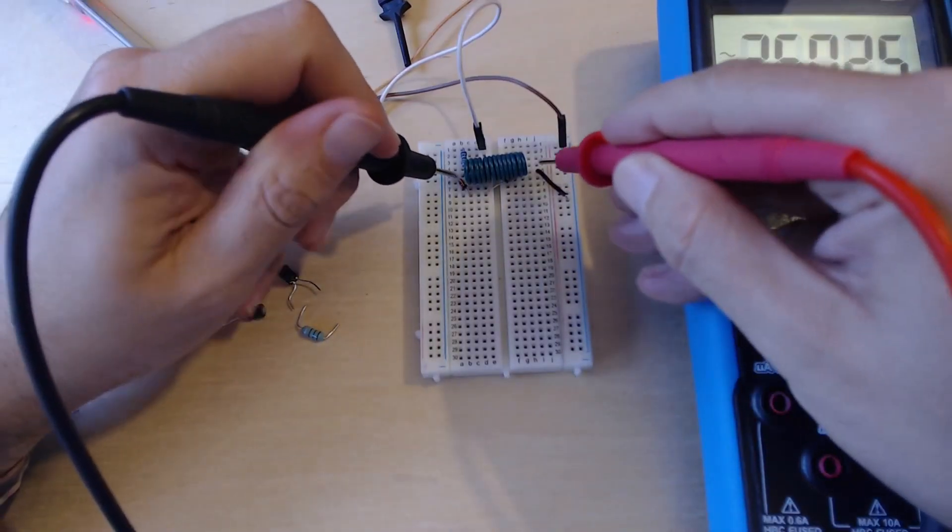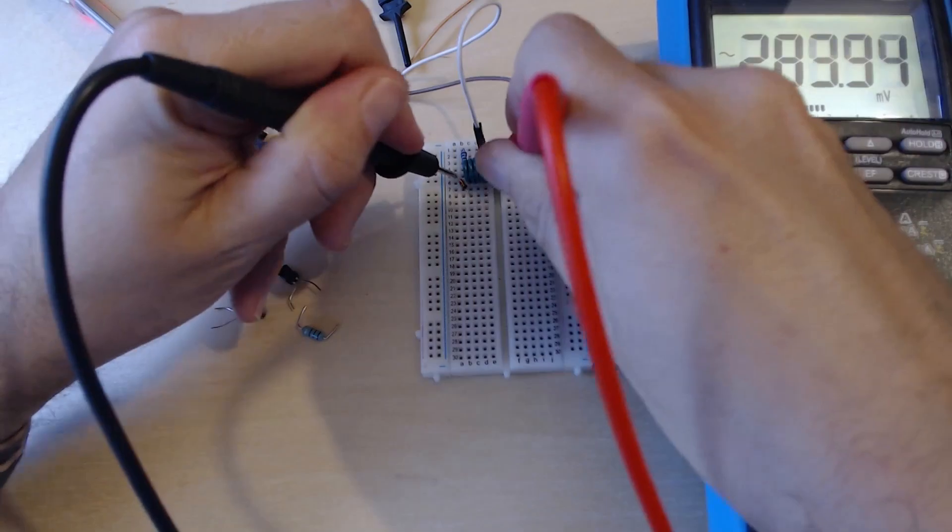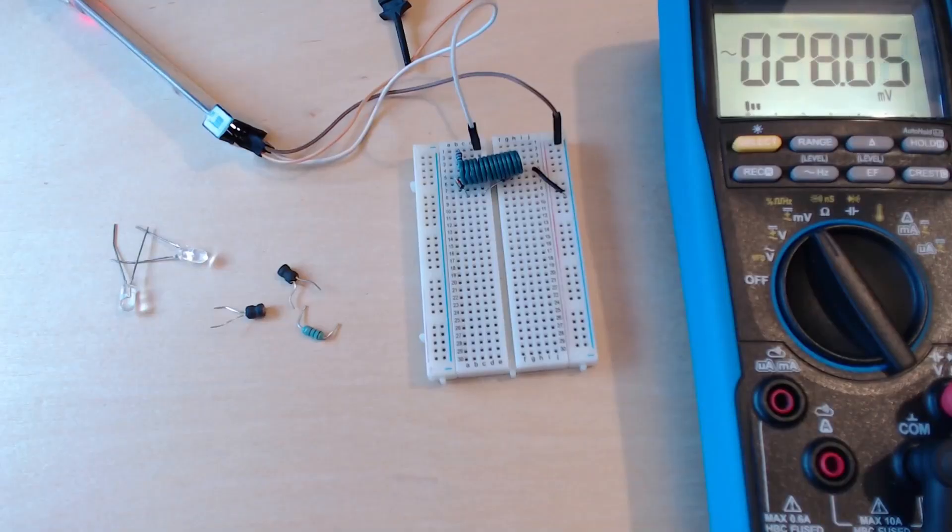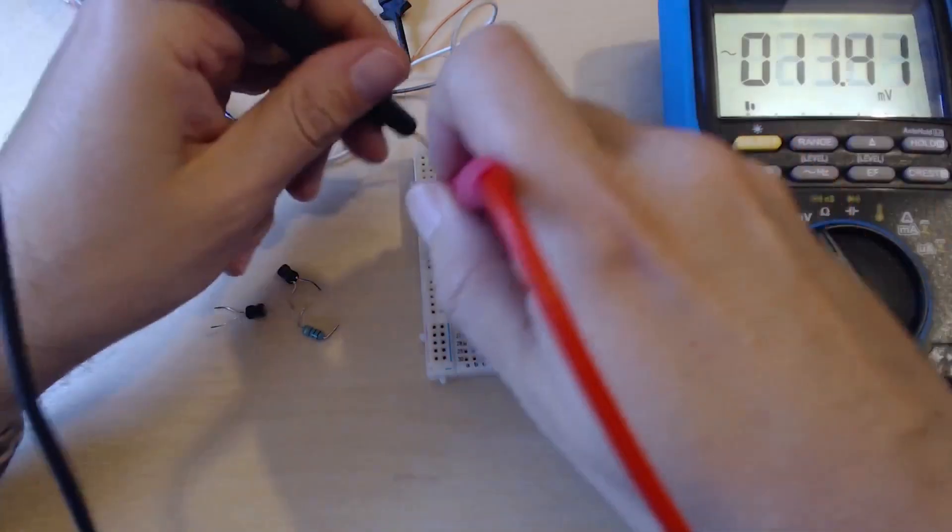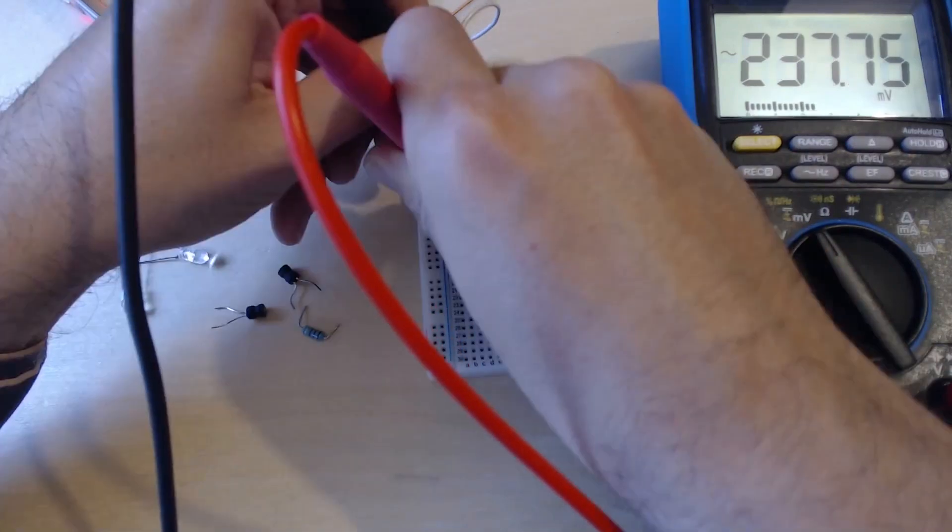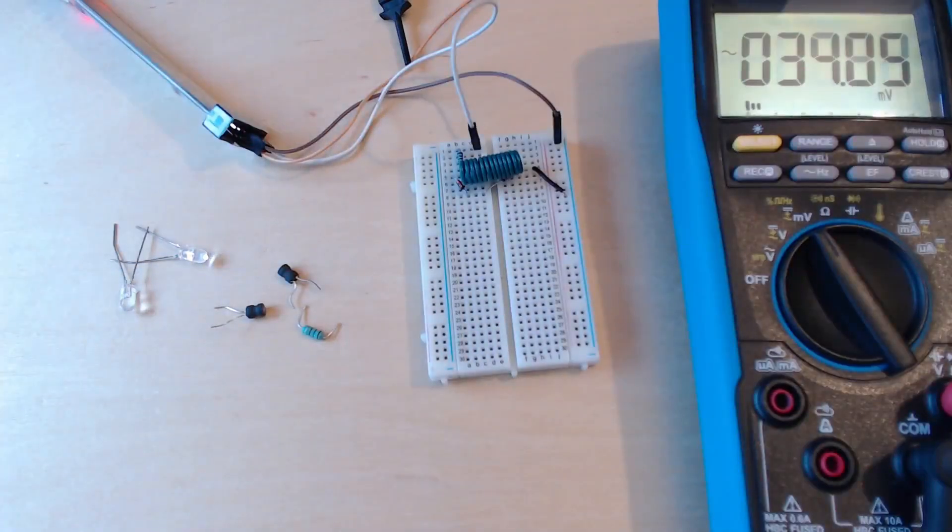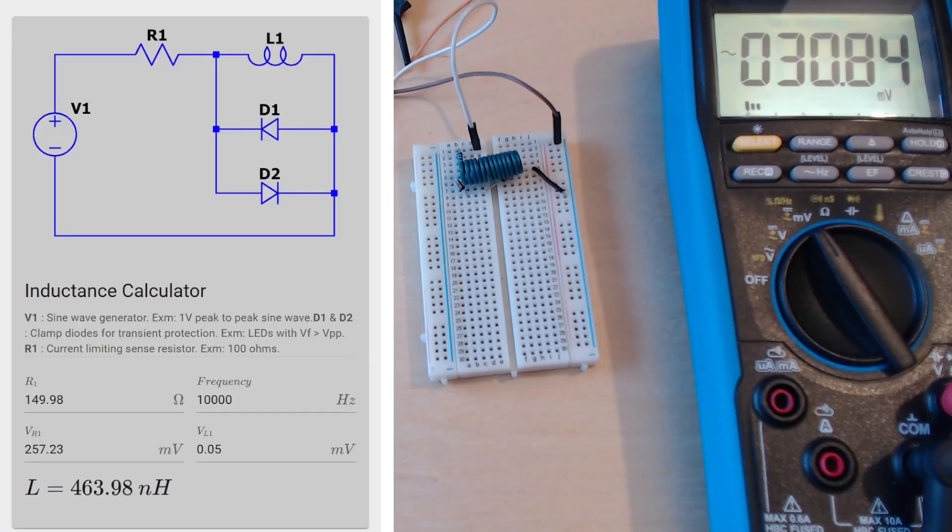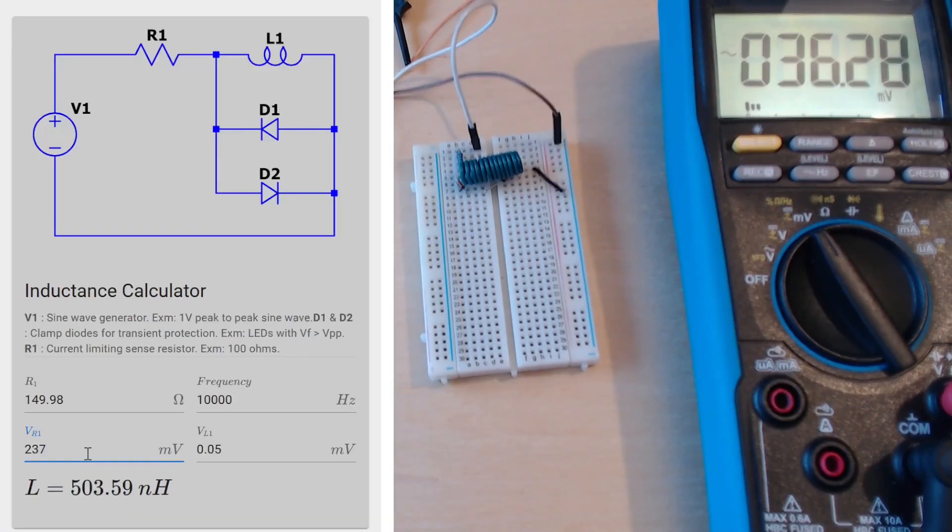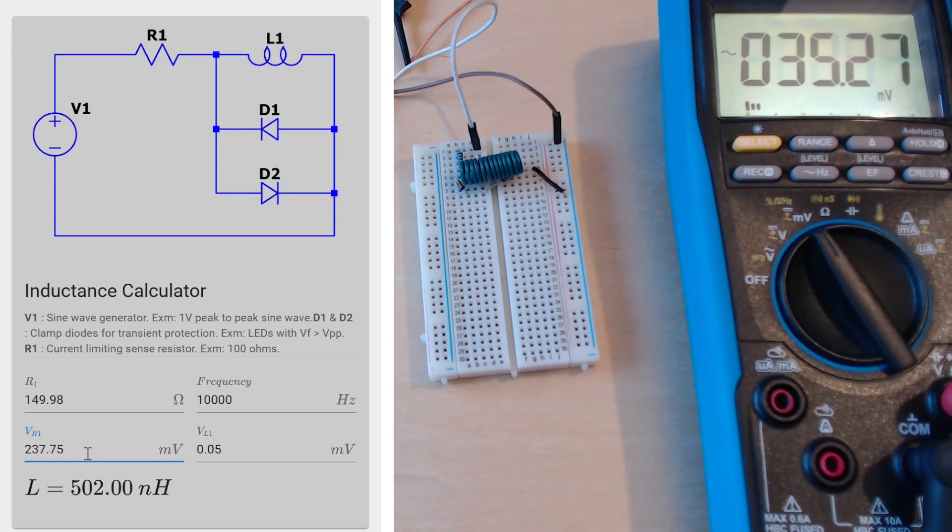Let's see if there's any change in the voltage across our inductor. Well it was 0.5 after all. What about this one? What do we have here? 237.75. Okay, let's put these into our values in the tool: 237.75 and 0.05, and our frequency is 15 kilohertz. Yeah, so we're getting closer to 200 nanohenrys.